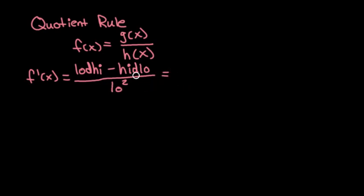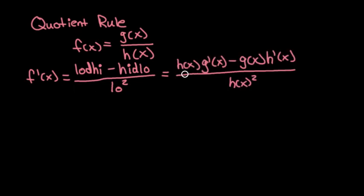Great question. This is just a tool to remember it. Real equation: low d high is just the bottom, the denominator h(x), times d high, the derivative of what's on top—so g'(x)—minus high d low, all over low squared. So I find that this is much easier to remember. I don't know, maybe this is more helpful. Whatever works.